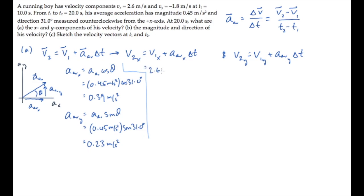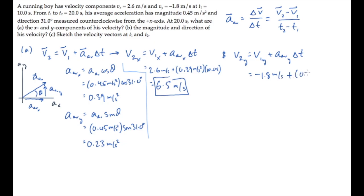The final x component of velocity is the initial x component plus the x component of acceleration multiplied by the time. 10 seconds passes in between t1 and t2, and that gives a final x component of 6.5 meters per second. Doing the same thing for the y component, we substitute its initial value, the y component of the acceleration, and the change in time, to find the final y component of velocity is 0.5 meters per second.